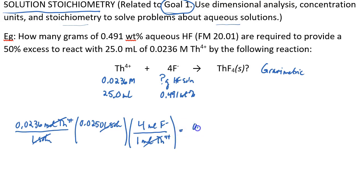I'm going to do this arithmetic, and I'm getting 0.00236 moles of fluoride. This is the moles of fluoride needed to react with all of the thorium-4.